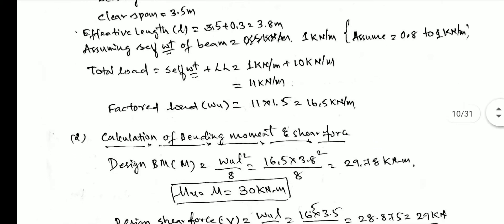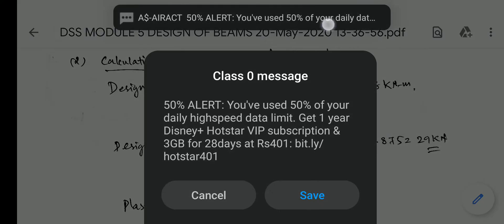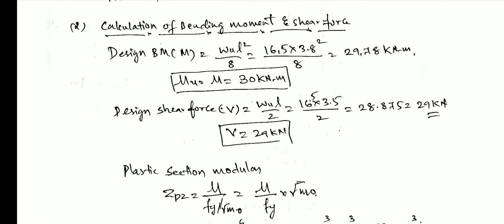In step two, we calculate the design bending moment and shear force. For a simply supported beam, maximum bending moment Mu = wuL²/8. Substituting wu = 16.5 kN/m and effective span L = 3.8 m: Mu = 16.5 × 3.8² / 8 = 29.78 kN·m, rounded to 30 kN·m. Design shear force Vu = wuL/2 = 29 kN.